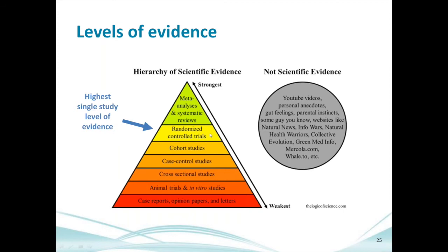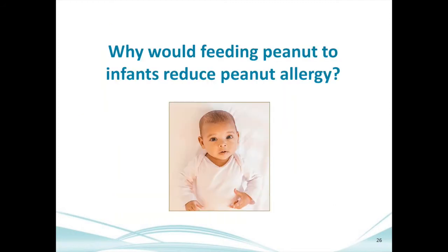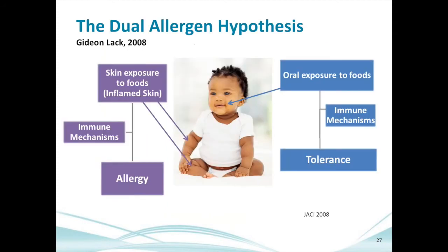For children who had small positive skin tests at baseline, there was a more dramatic 25% absolute risk reduction — from about 35% peanut allergy in those avoiding to around 10% in those eating peanut regularly. Randomized controlled trials are the highest level of evidence for a single study, whereas the year 2000 AAP recommendations were based on animal studies and opinion papers. The new guidelines are based on strong evidence, while the old guidelines were based on very weak evidence.